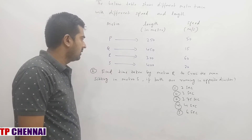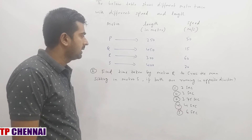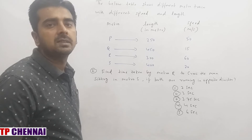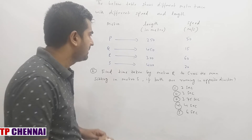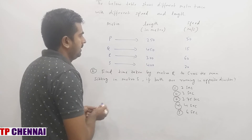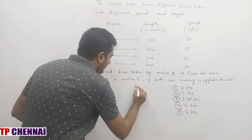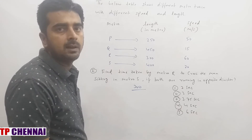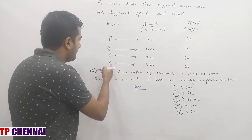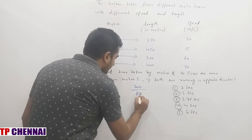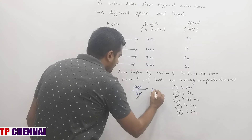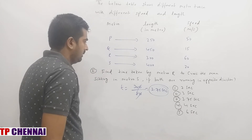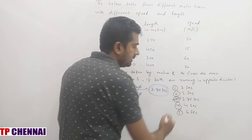Second DI question: Find the time taken by metro R to cross a man sitting in metro S if both are running in opposite directions. When a train crosses a man, distance = length of the train. Length of metro R = 300. Since R and S move in opposite directions, relative speed = 60 + 20 = 80. Time = 300/80 = 3.75 seconds.